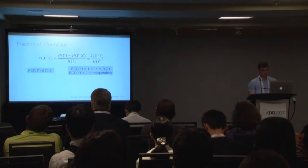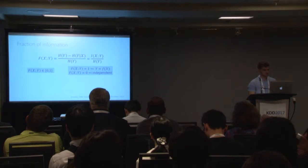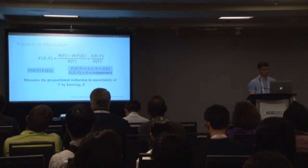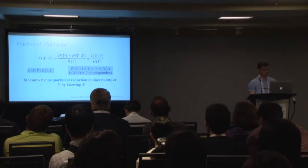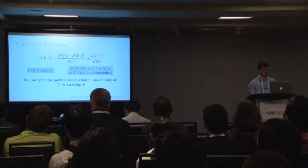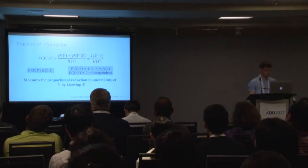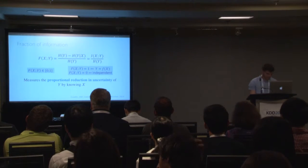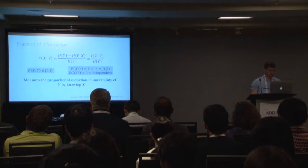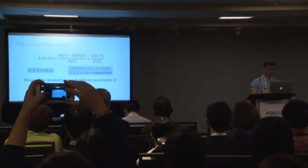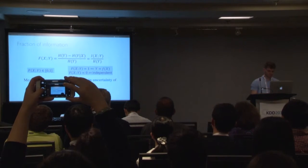And if the user asks what this means, we can tell them that it measures the proportional reduction in uncertainty of Y by knowing X. So now we need to find an estimator for the fraction information, but we need to consider a few things first.